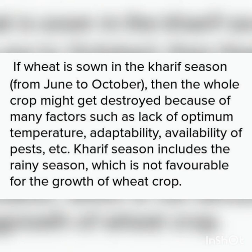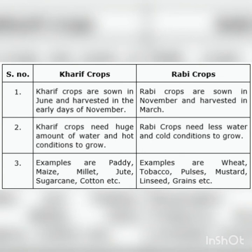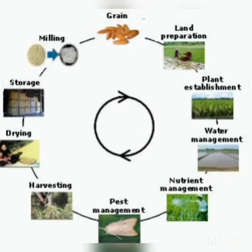But if we grow wheat in the month of October — in Rabi season — after certain growth, when the plants start flowering, the night duration reduces. We get a hot climate from February onwards, which is a suitable climate for the maturation of grains and for the formation of florals. That is the reason why wheat is cultivated in Rabi season only. Keeping this in mind, farmers cultivate some crops in Rabi season and some in Kharif. Paddy is cultivated in both Rabi and Kharif seasons.